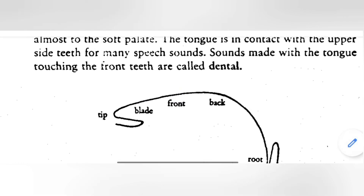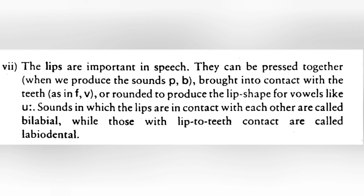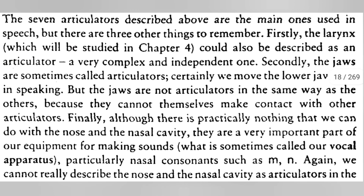In Figure two, the parts of the tongue are: tip, blade, front, back, and root. The lips are very important in speech. They can be pressed together when we produce sounds like /p/ and /b/, brought into contact with the teeth as in /f/ and /v/, or rounded to produce the lip shape for vowels like /u/. Sounds where the lips are in contact with each other are called bilabial, while those with lips to teeth contact are called labiodental.